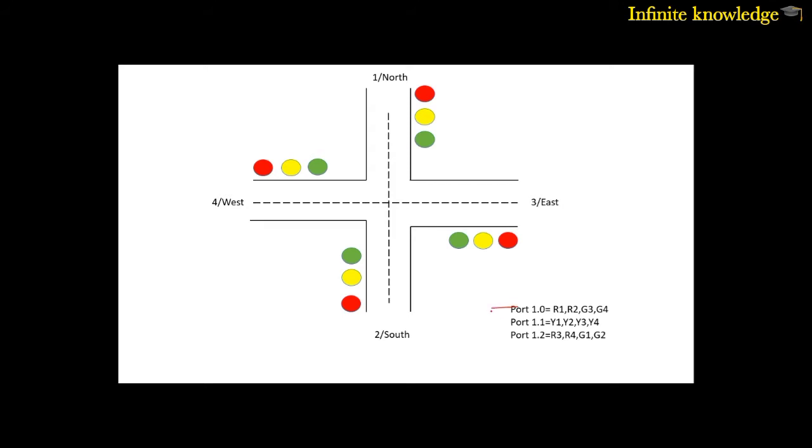When port 1.0 pin is high, R1 and R2 will glow on, and G3 and G4 will also be on. What this means is that people from east side go to west side and vehicles from west side go to east side. But during this condition, the red bulbs are on, so vertical movement from north to south or south to north is not allowed.